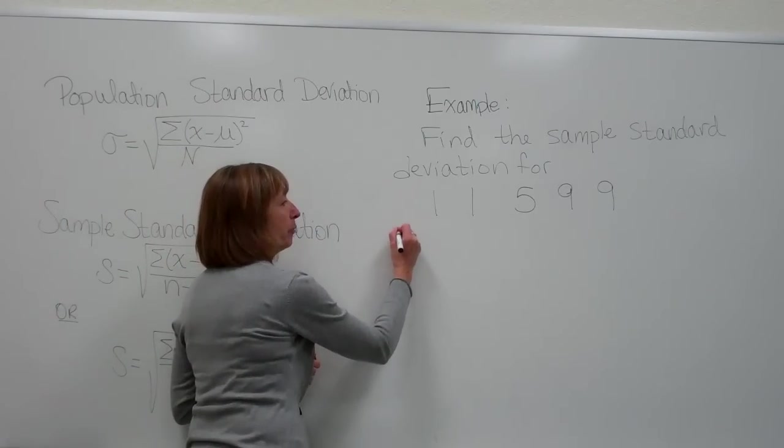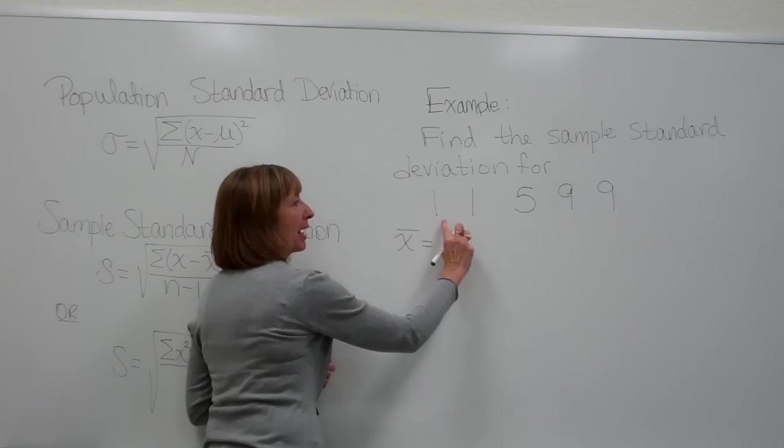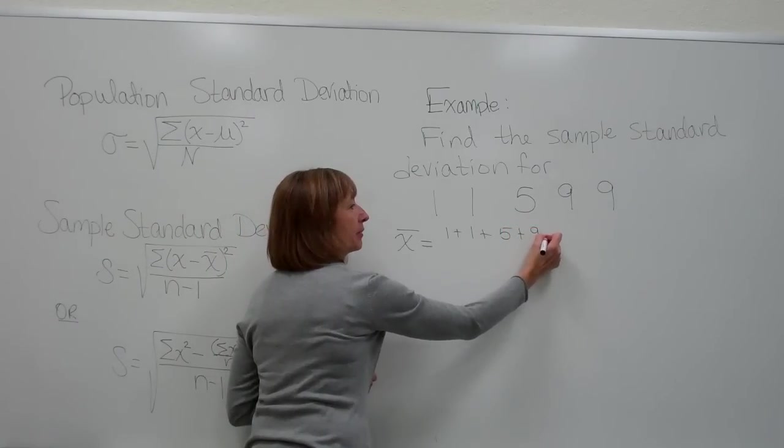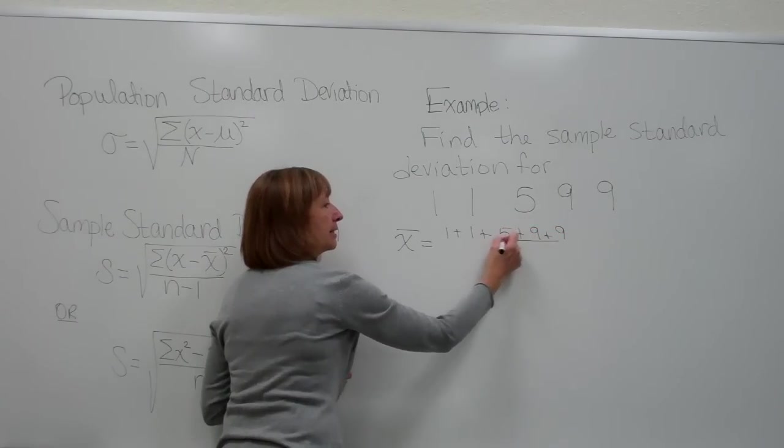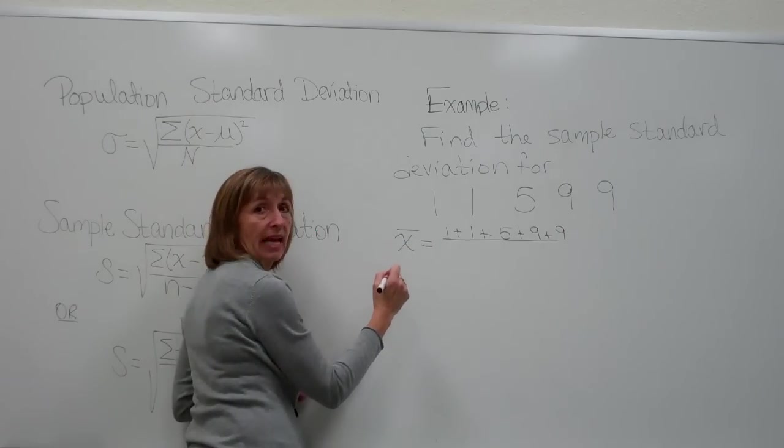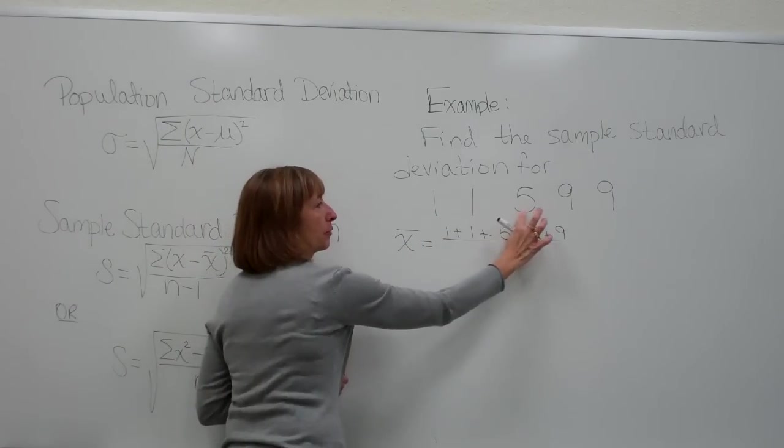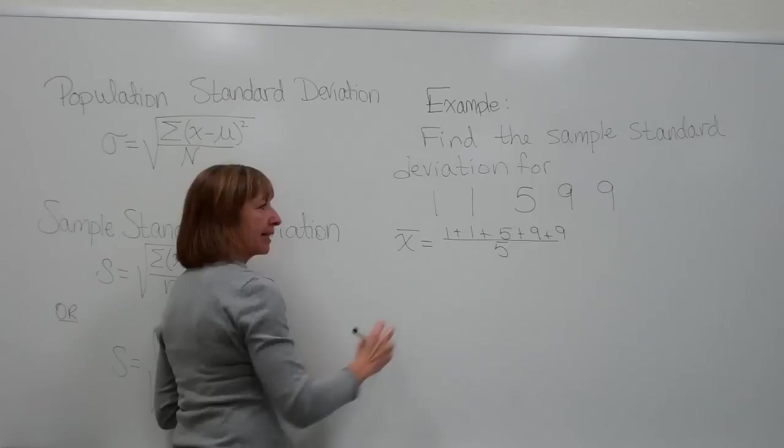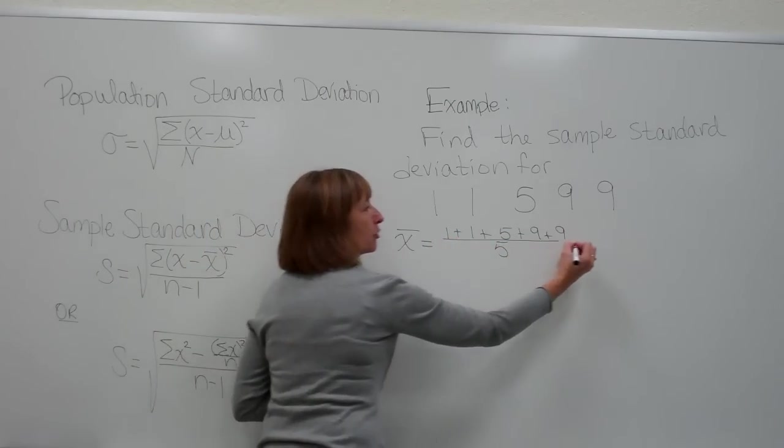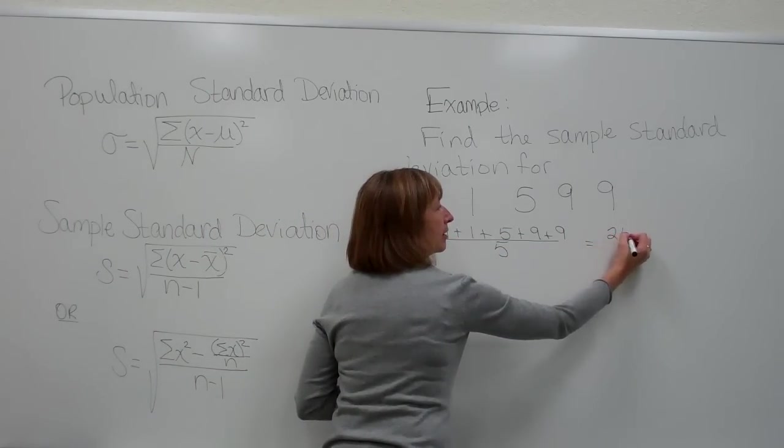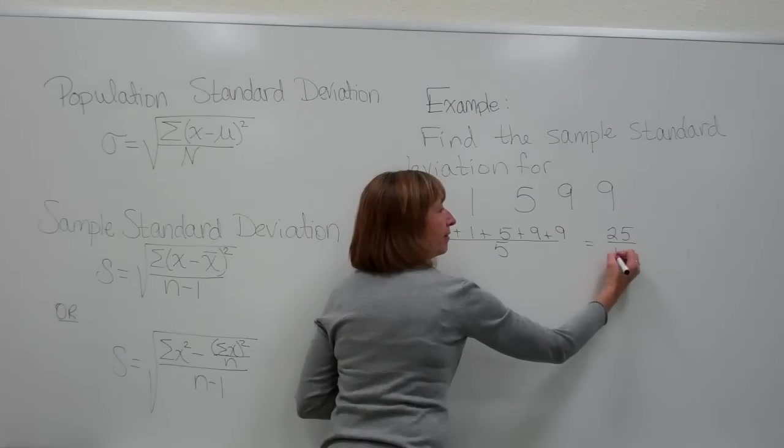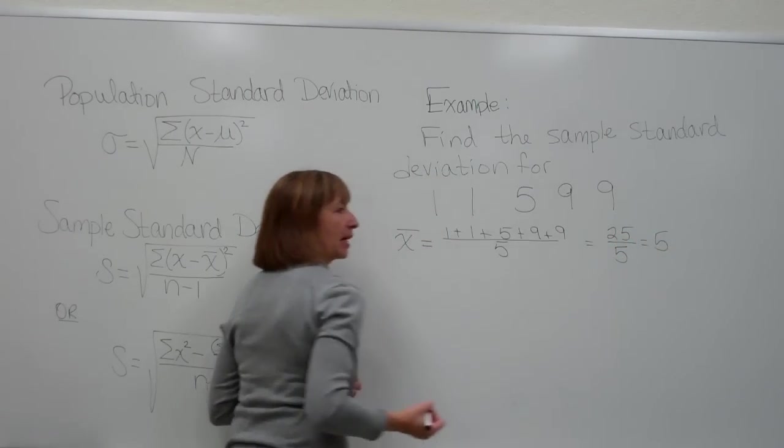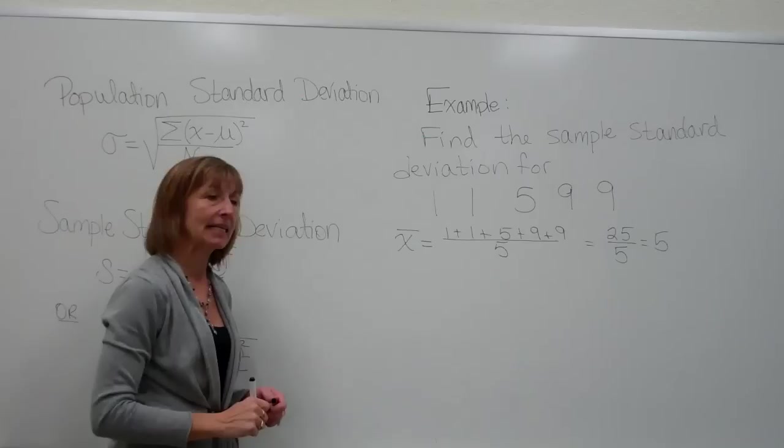And the sample mean, remember, you get by adding up your data values, so 1 plus 1 plus 5 plus 9 plus 9, and dividing it by the number of data values you have, 1, 2, 3, 4, 5. So when we add that together in the numerator, we get 25 divide by 5, and 25 divide by 5 is 5. My sample mean for this data set is 5.